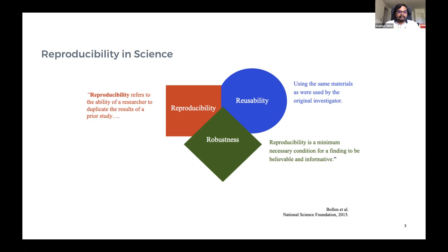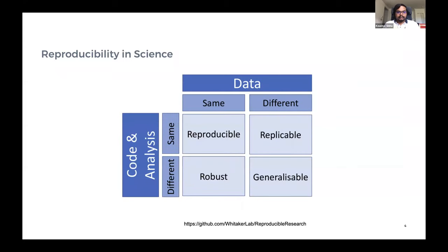Just for the purposes of this talk, I'm going to set up a definition. By reproducible, I mean that if you use the same code and same data given by the authors and you get the same results, then that is reproducible. Whereas robust is when you use different code but on the same data. Replicability is using the same code but on a different set of data. And if you have both different but still get the same claims of a particular paper, then that is the highest level of reproducibility — that is generalization.